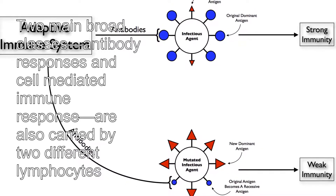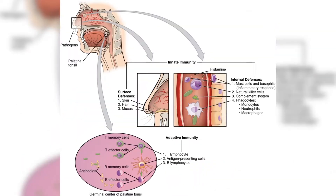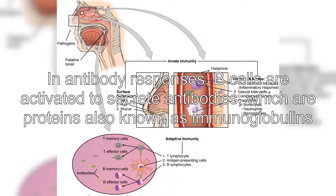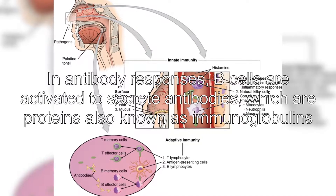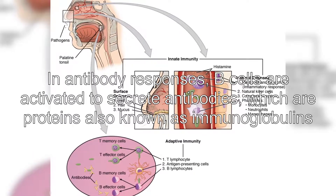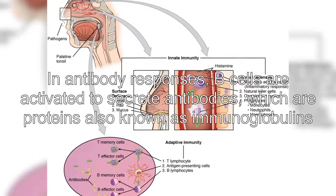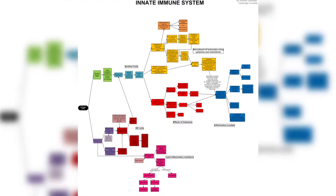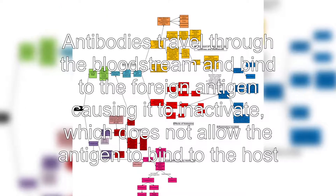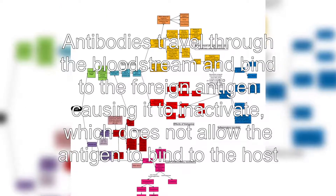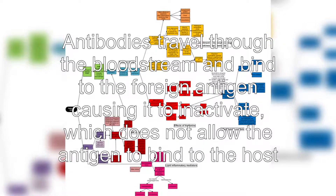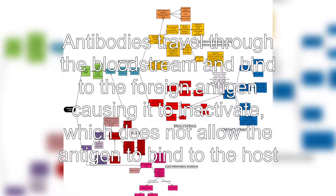Sometimes the acquired system is unable to distinguish harmful from harmless foreign molecules; the effects of this may be hay fever, asthma, or any other allergy. Antigens are any substances that elicit the acquired immune response. The cells that carry out the acquired immune response are white blood cells known as lymphocytes.